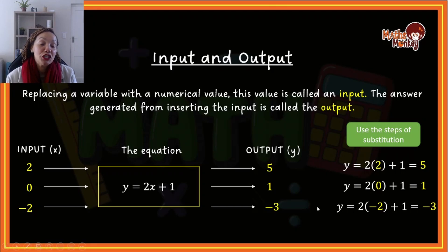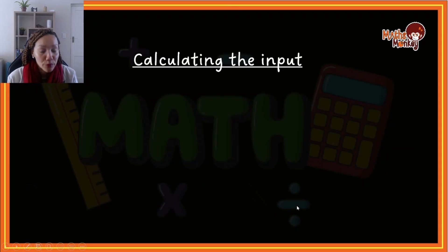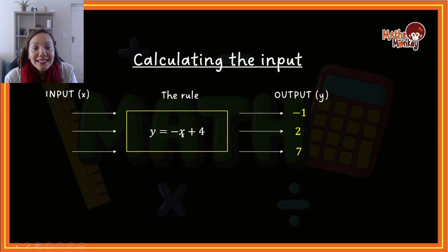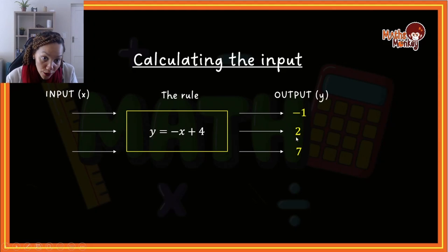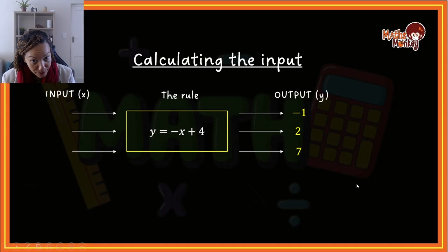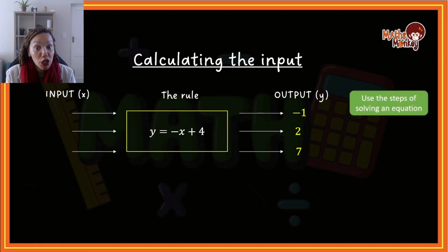This has been teaching you how to calculate the output — we used the input, applied the equation, and calculated the output. Now let's look at calculating the input. What if they give you the outputs and the rule but not the inputs? What value must go in by x to get an output of negative 1, or 2, or 7? To calculate outputs we use substitution, and I have a whole lesson on that. But now to calculate inputs, we're going to use the process of equations — solving for x.